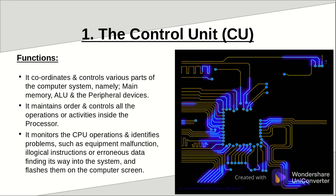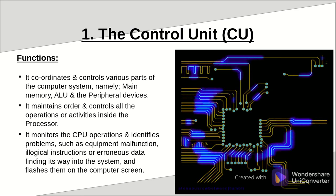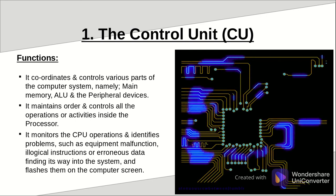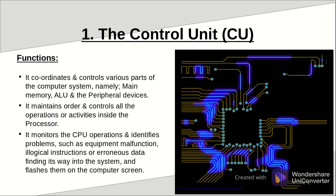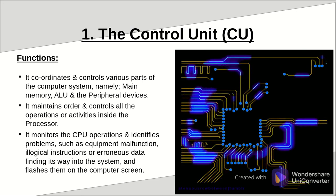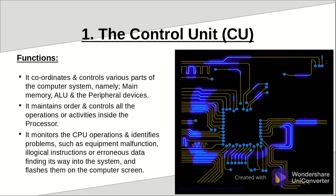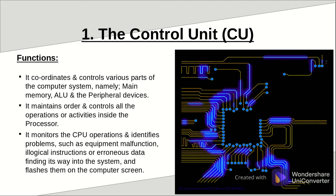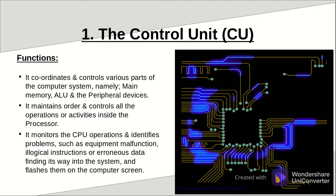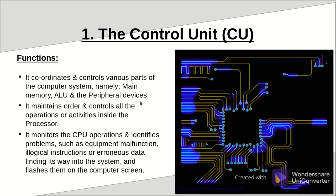A few functions of the system clock include: coordinating and controlling various parts of the system, including those inside the CPU and those outside it; maintaining order and controlling operations inside the processor; and monitoring the CPU operations and identifying problems as they occur, then reporting them to the user through other mechanisms.